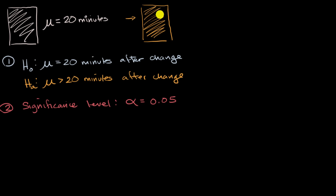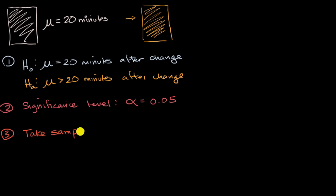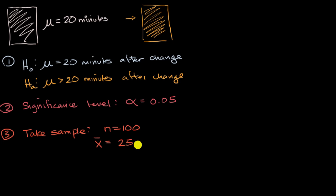However, if the probability of getting the statistics for that sample is at the significance level or higher, then we say we can't reject the null hypothesis and we aren't able to have evidence for the alternative. So in step three, we would take a sample — let's say we take 100 folks who visit the new yellow background website — and we measure sample statistics: the sample mean, let's say it is 25 minutes. We would also calculate the sample standard deviation.